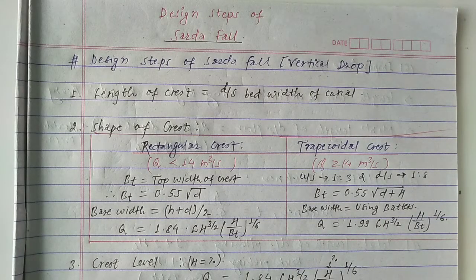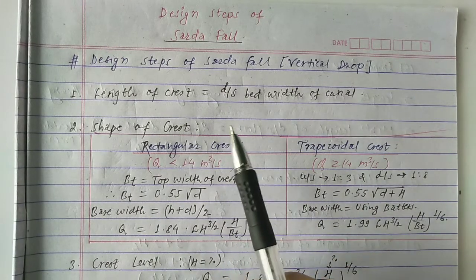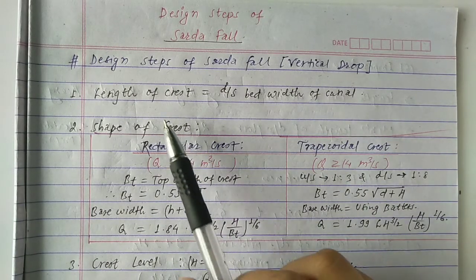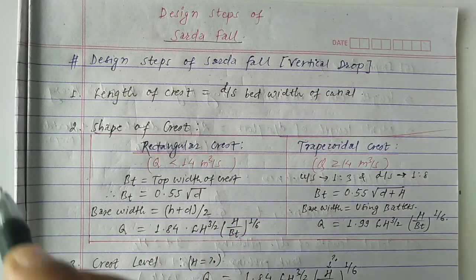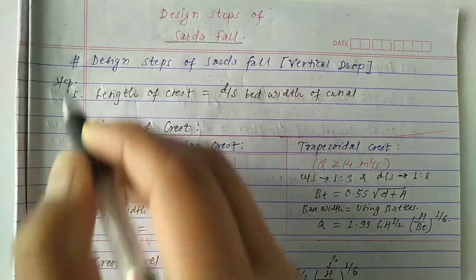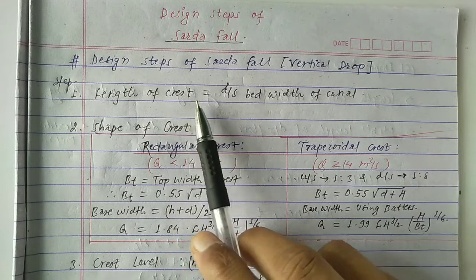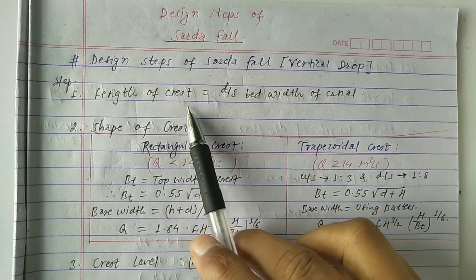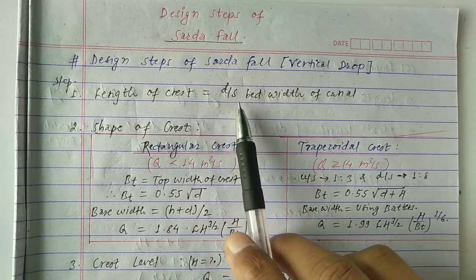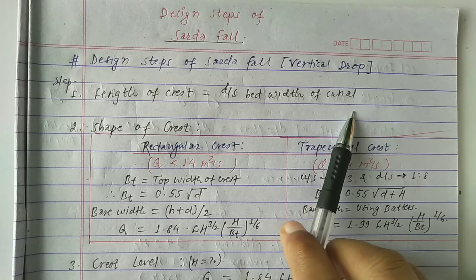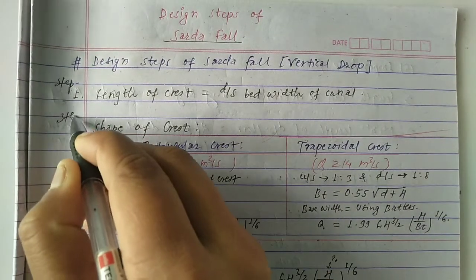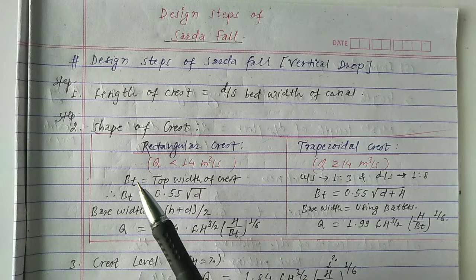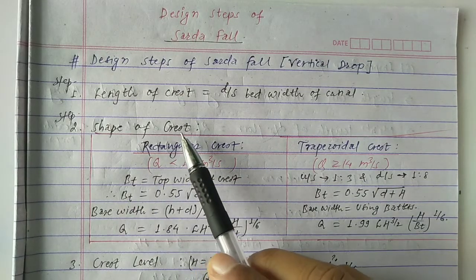So you should first see the previous video, after which you can easily understand these design steps. In Step 1, we have to determine the length of crest. The length of crest is simply taken as the downstream bed width of the canal.